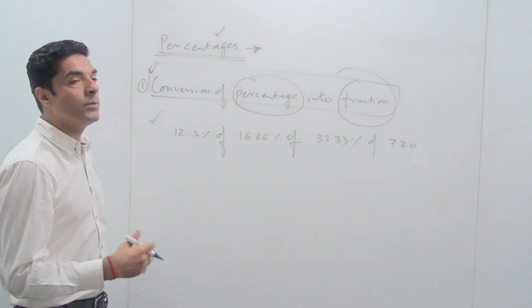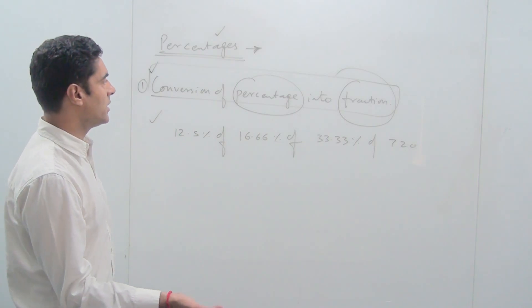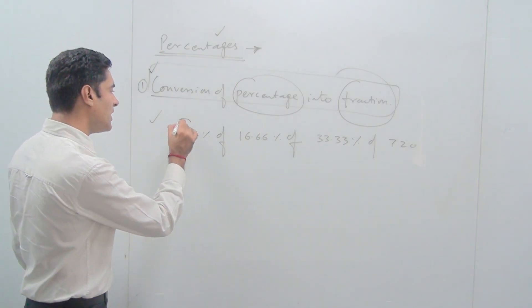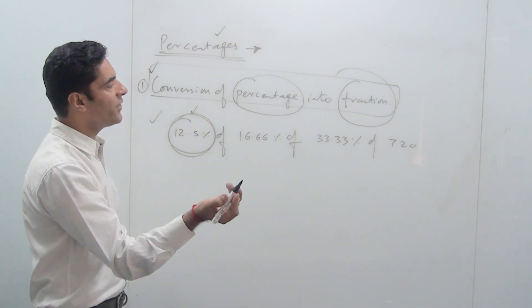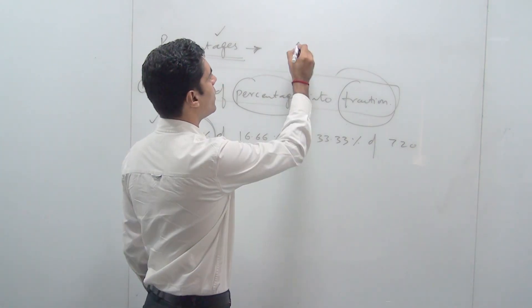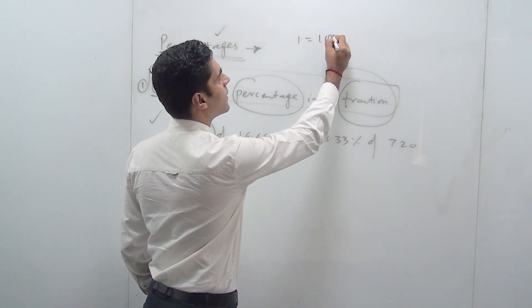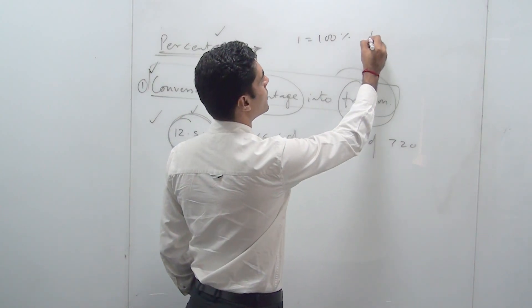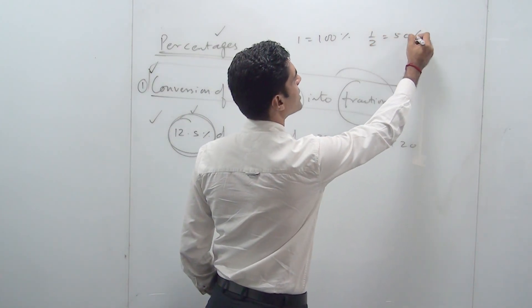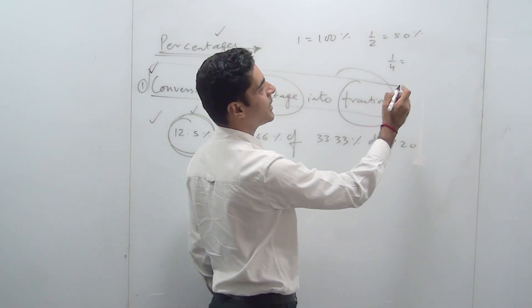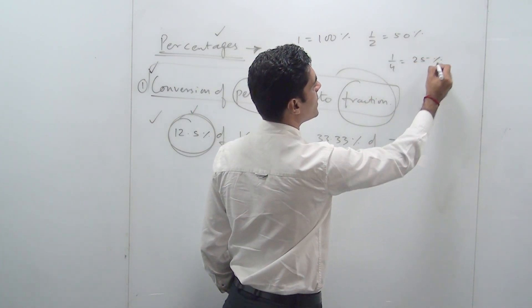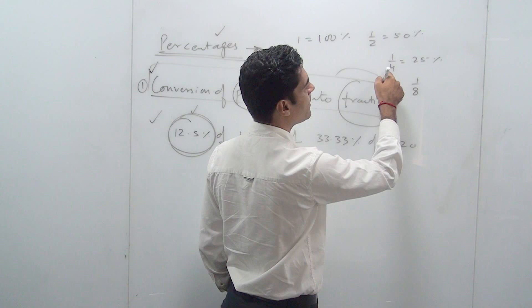Another approach is to directly convert this percentage into its fraction form, and that's very simple. What we know is that 1 is 100%, so 1/2 is half of it, which is 50%. 1/4 is half of that—dividing left-hand side and right-hand side by 2 gives 25%. If I divide this by 2 and this by 2, this will come out to be 1/8, and this will be 12.5%.